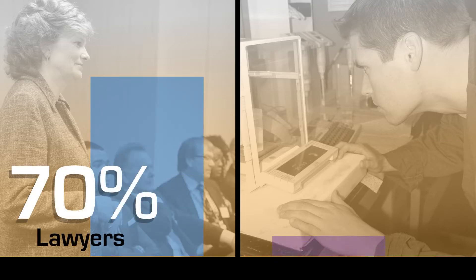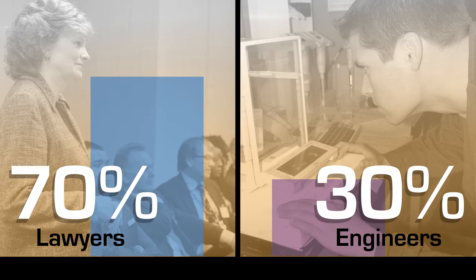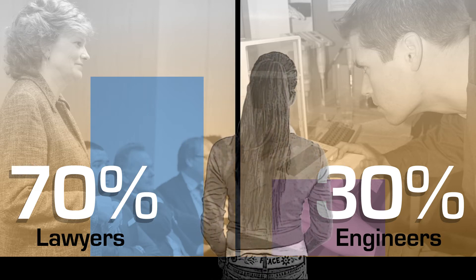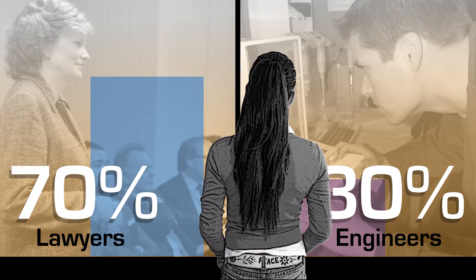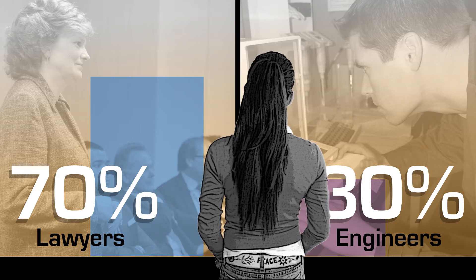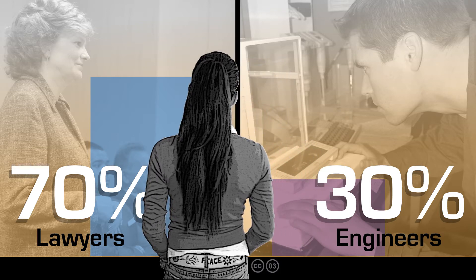A classic example in psychology: imagine a room that has 70 lawyers but 30 engineers, and I tell you that I've chosen one person at random out of that room. I give you a brief description — this person enjoys solving math problems, enjoys doing puzzles, enjoys building model ships — and I ask you to guess, is he a lawyer or is he an engineer? Most people will guess that he's an engineer because those hobbies sound like the sorts of things an engineer would like. However, statistically speaking, it's much more likely that that person is a lawyer. That's an example of the type of decision making that leads heuristics and biases researchers to point to the mistakes we make.